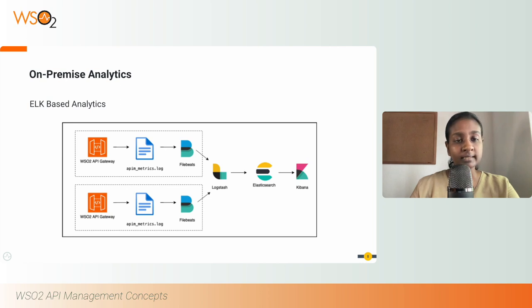If you look at this diagram, you will see how ELK analytics works in the on-premise analytics solution in WSO2 API Manager. ELK-based analytics deployment architecture has four main components: file beats, logstash, Elasticsearch, and Kibana.